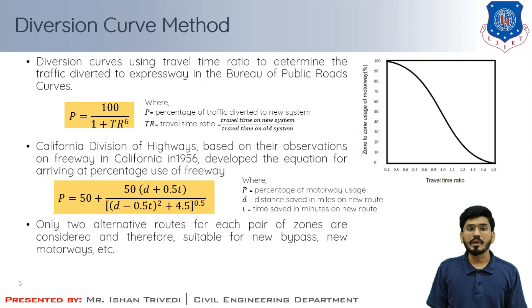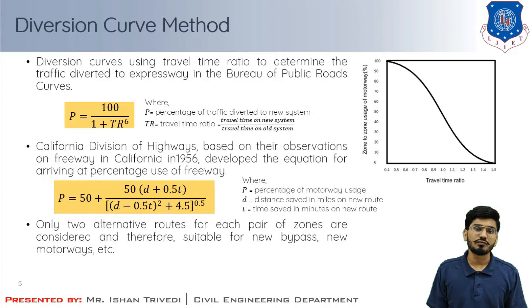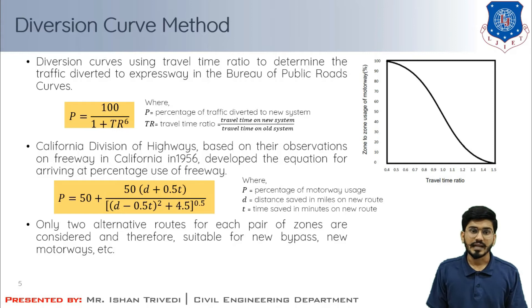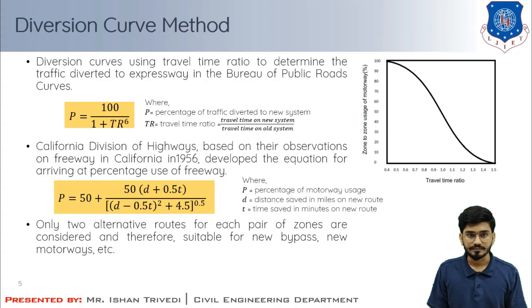The main drawback of diversion curve assignment is that only two alternative routes for each zone pair are considered, and the technique is therefore suitable for new bypasses and new motorways only. This concludes the theory of the diversion curve technique.